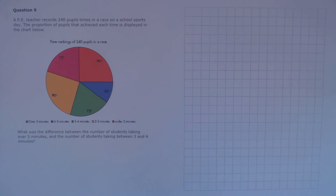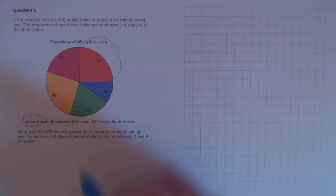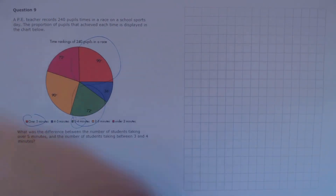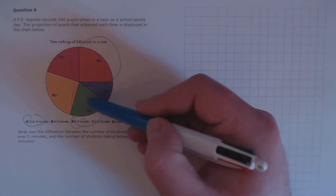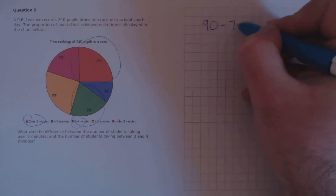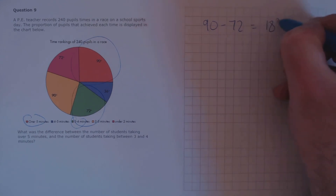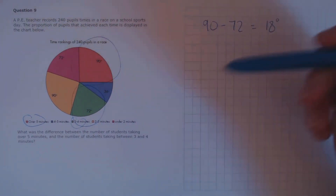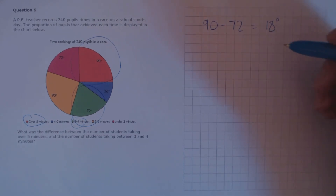Question 9. A PE teacher records 240 pupils' times in a race on a school sports day. The proportion of pupils that achieved each time is displayed in the chart below. What was the difference between the number of students taking over five minutes and the number of students taking between three and four minutes? Over five minutes is this segment, and between three and four minutes is the green segment. We can find the difference between the angles first — which is 18 degrees — then work out what that is as a fraction of the entire circle.